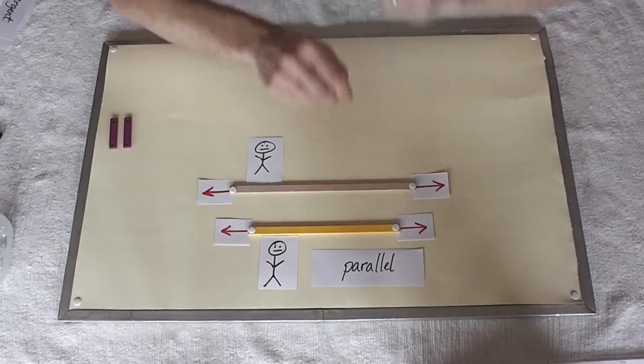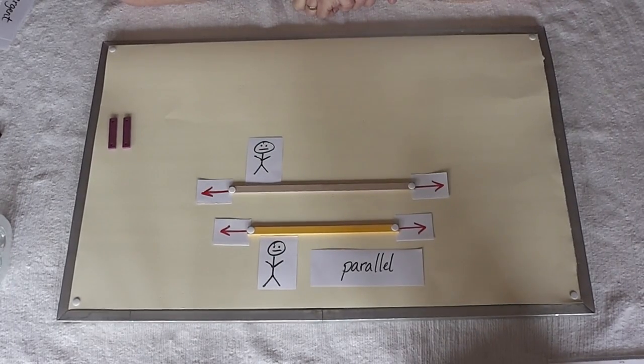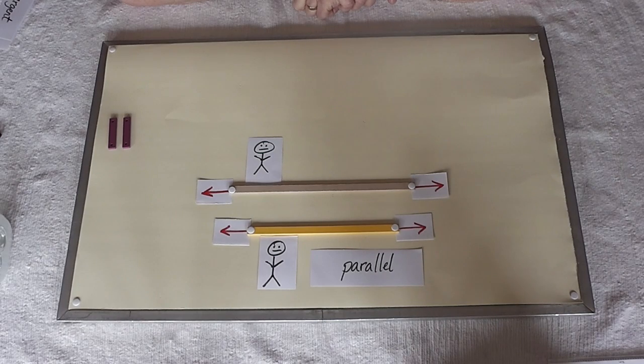Parallel comes from Greek, para meaning alongside, and allelon, one another. So these are lines that are alongside one another.